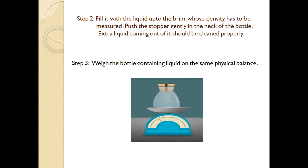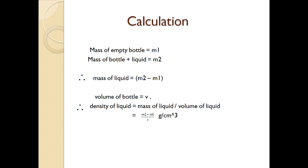Step three: weigh the bottle containing liquid on the same physical balance and note it as m2. So m1 is mass of empty bottle and m2 is mass of empty bottle plus liquid, therefore mass of liquid equals m2 minus m1. For the calculation: mass of empty bottle = m1, mass of bottle plus liquid = m2, mass of liquid = m2 − m1, and volume of liquid equals the volume marked on the relative density bottle (V). Therefore density of liquid = mass of liquid / volume = (m2 − m1) / V.